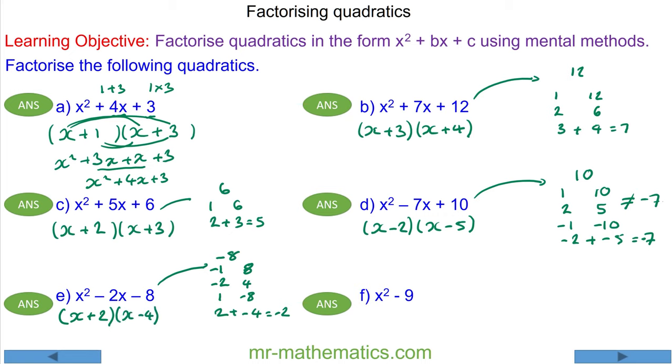For question F, we have x squared with no x terms, 0x which is why it's omitted, minus 9. Well, two numbers that multiply to make negative 9 are negative 1 and 9, negative 3 and positive 3.